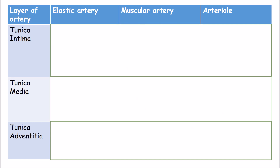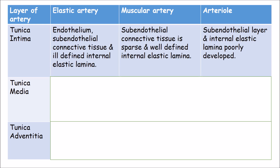Let us now look at the differences between the elastic artery, muscular artery, and arteriole. In the elastic artery, the tunica intima has a well-developed subendothelial layer of connective tissue and an ill-defined internal elastic lamina. In the muscular artery, the subendothelial layer is sparse and the internal elastic lamina is well-defined. In the arteriole, both the subendothelial layer and internal elastic lamina are poorly developed.